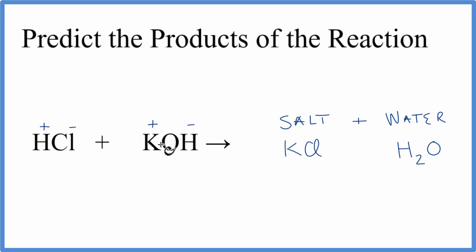We always write the positive ion first, plus water. So that's the reaction. We have HCl plus KOH, and that gives us KCl plus water.